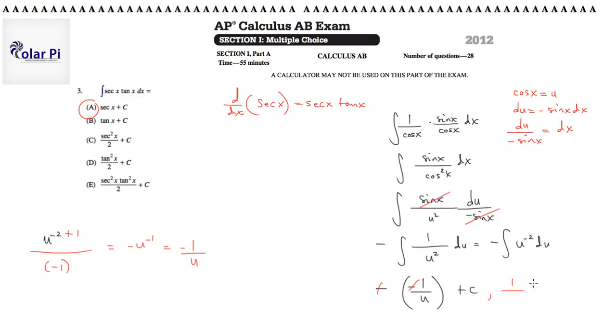But u is equal to cosine x, so this is saying 1 over cosine x plus c, which is clearly secant x plus c.